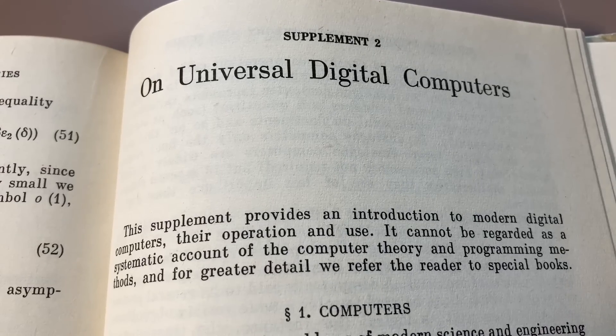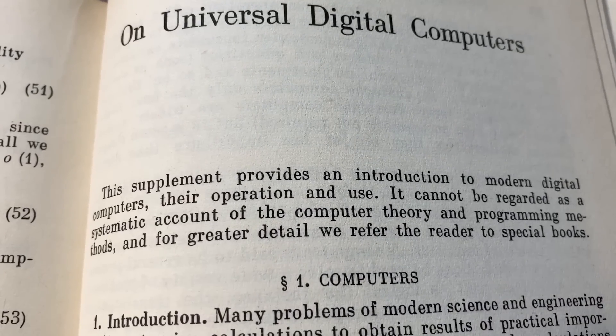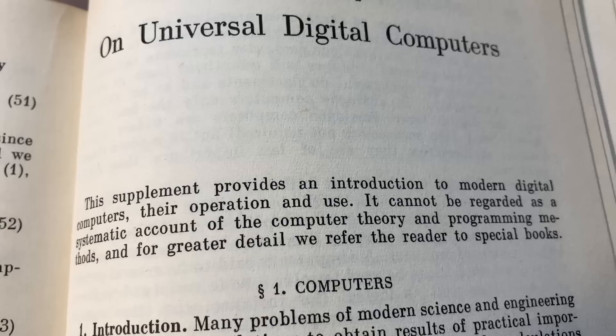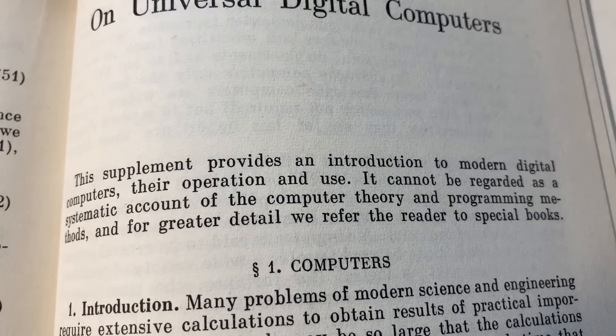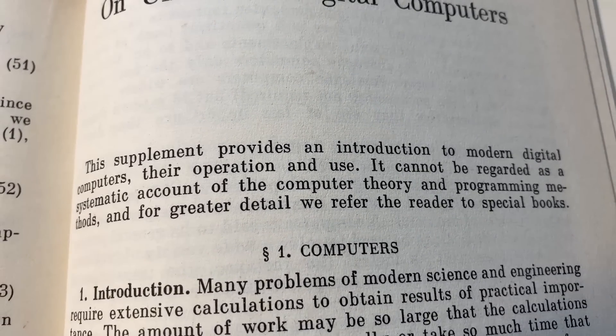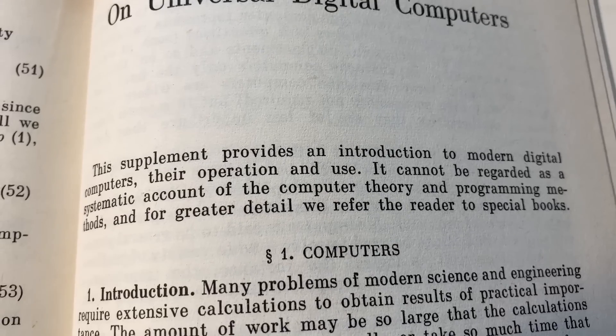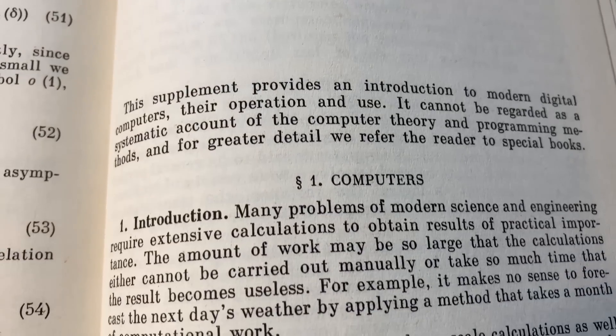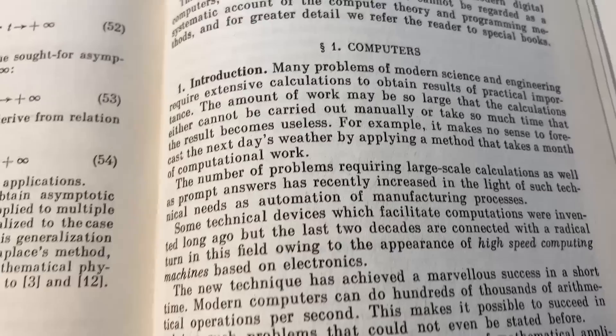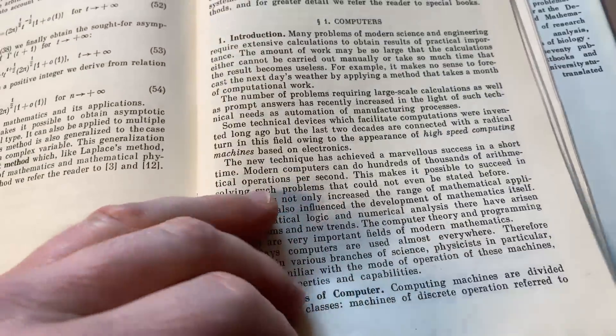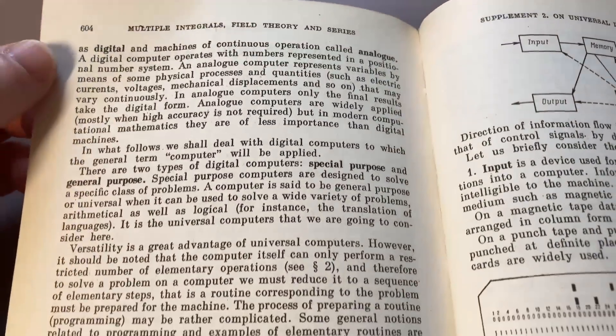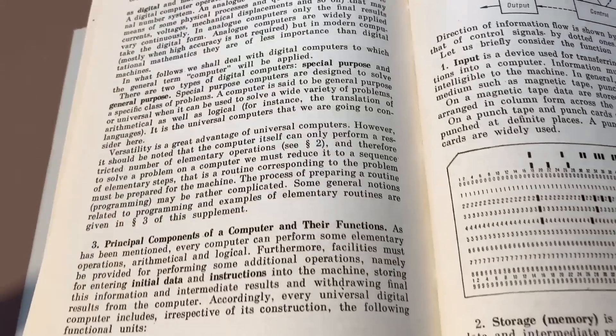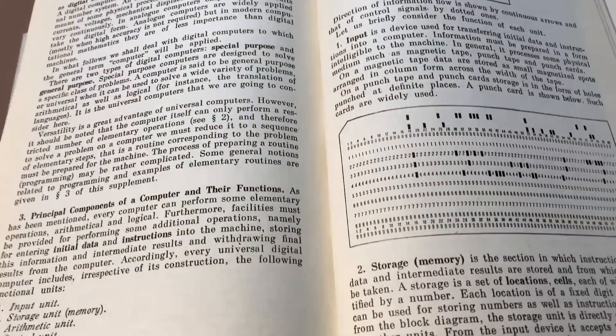The second supplement is on universal digital computers. This supplement provides an introduction to modern digital computers, their operation and use. It cannot be regarded as a systematic account of the computer theory and programming methods. And for greater detail, we refer the reader to special books. So it talks about computers and it's kind of cool because this was published, at least the first edition, in 1973, well before the existence of the internet.